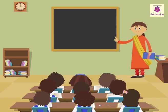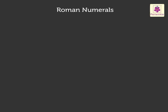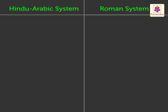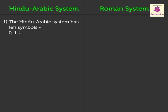Hello kids, today we will learn Roman numerals in a little more detail. We have already learned about the Hindu-Arabic system of numbers. Let us find out what is different in the Roman system of numerals. In the Hindu-Arabic system, we have ten different symbols for numbers: zero, one, two, three, four, five, six, seven, eight, nine.